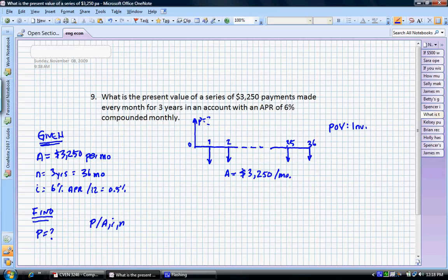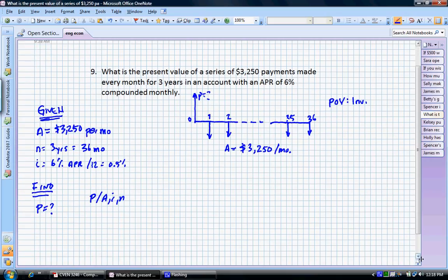Now, what we have to deal with here is we've got this interest rate of a half a percent per month. That means we can't use the factor tables, so we're going to have to use the formula.